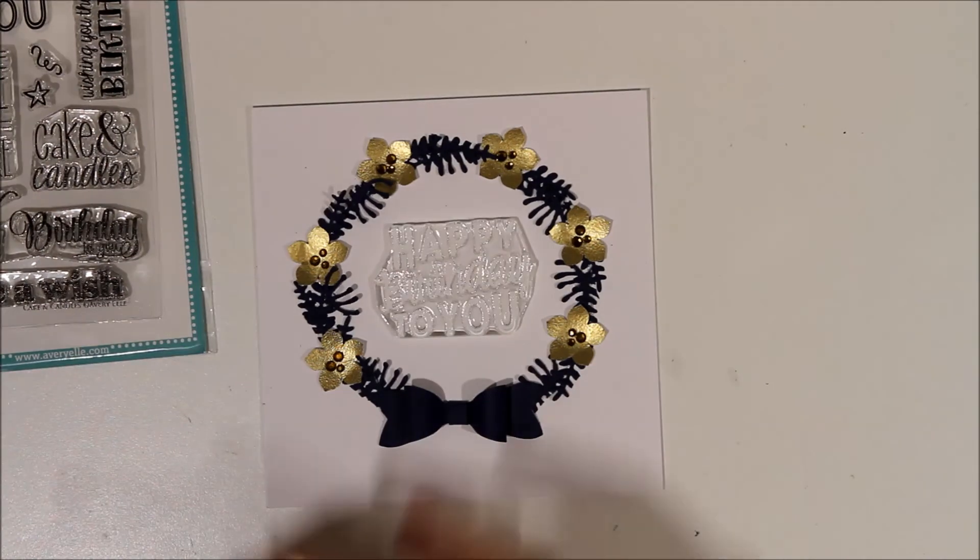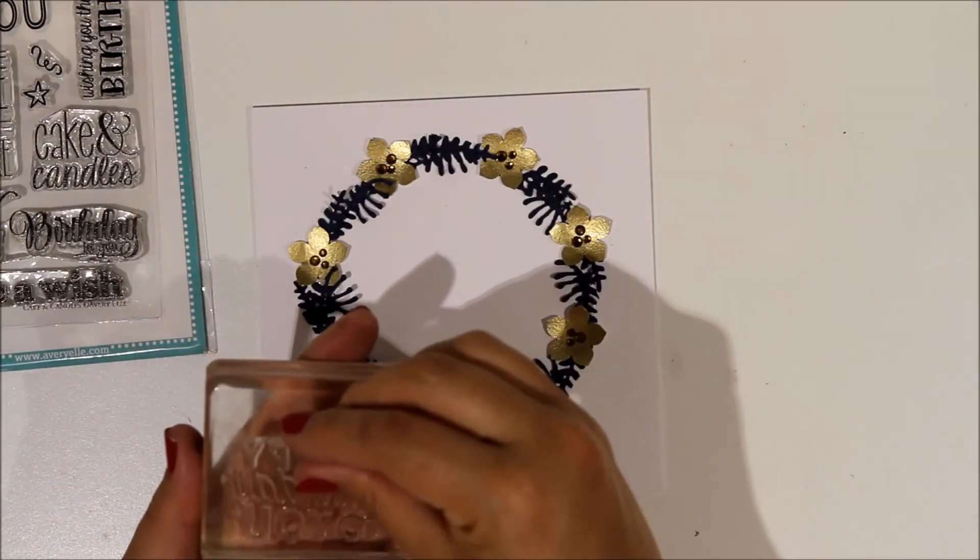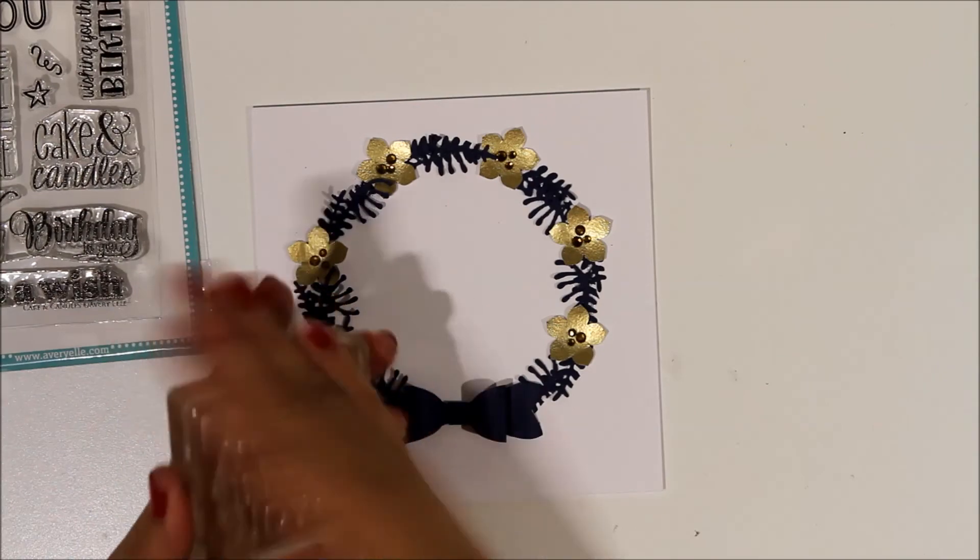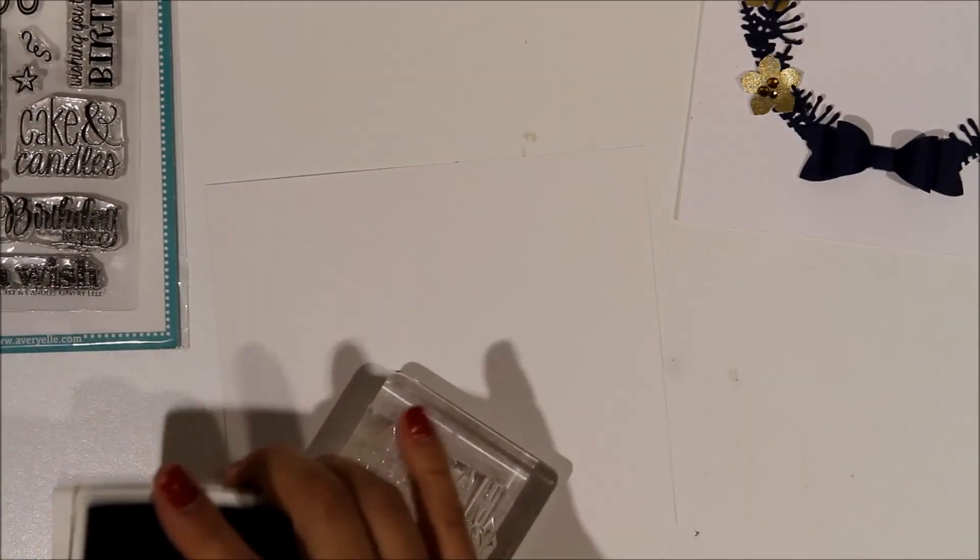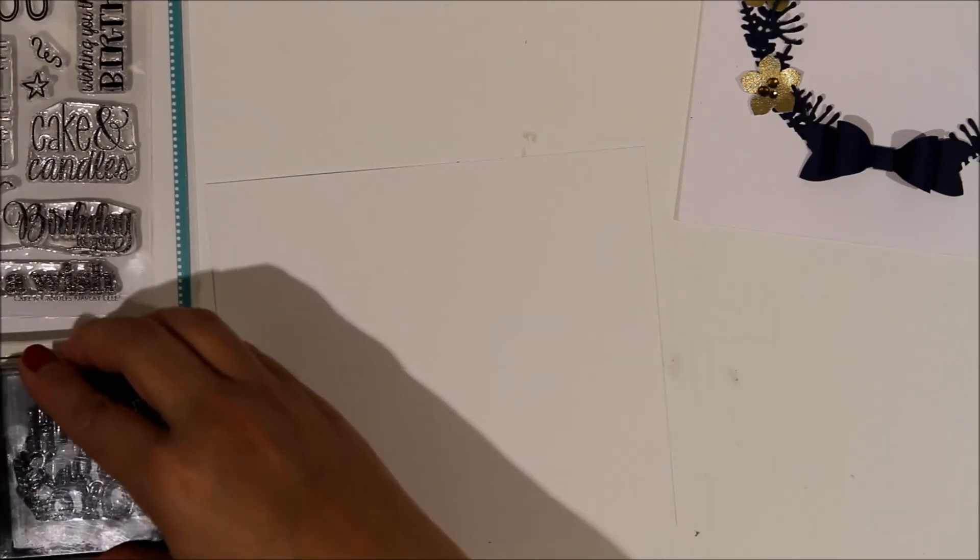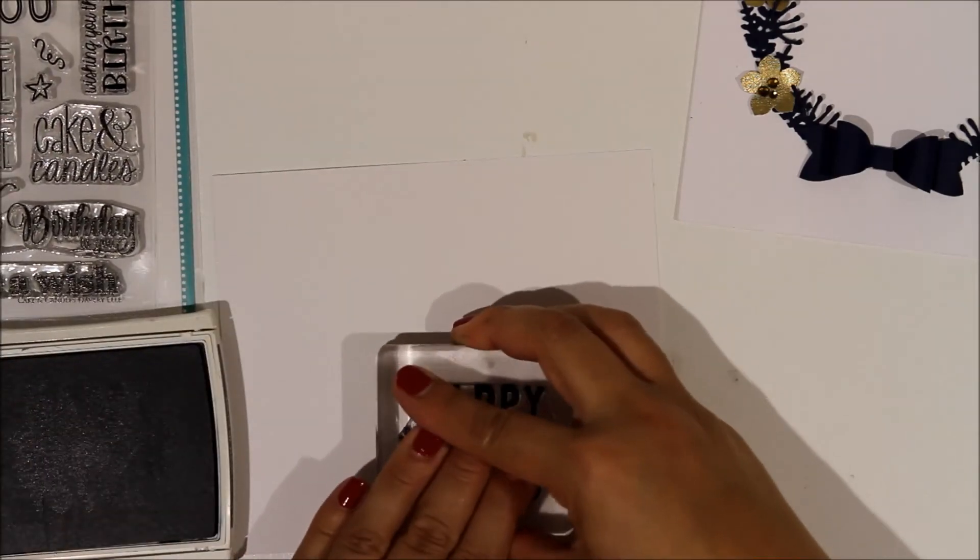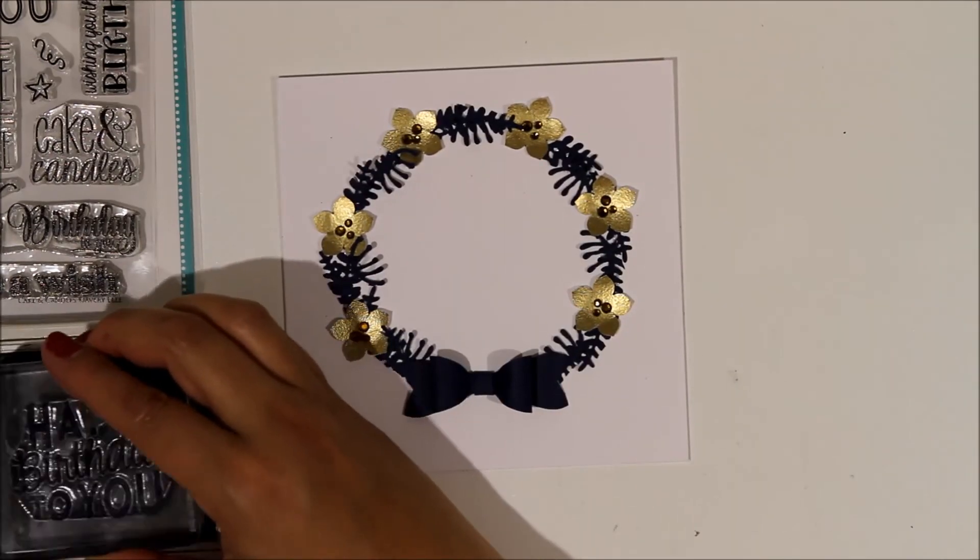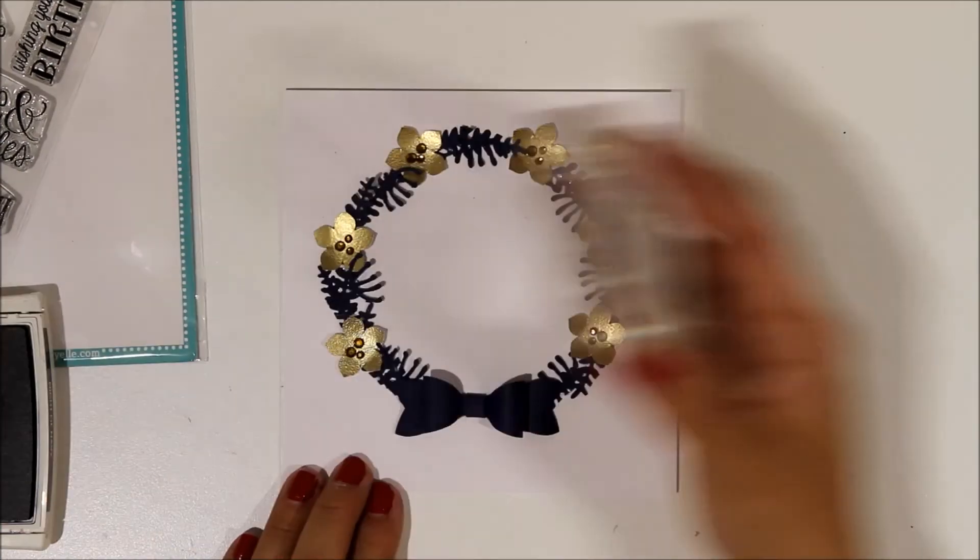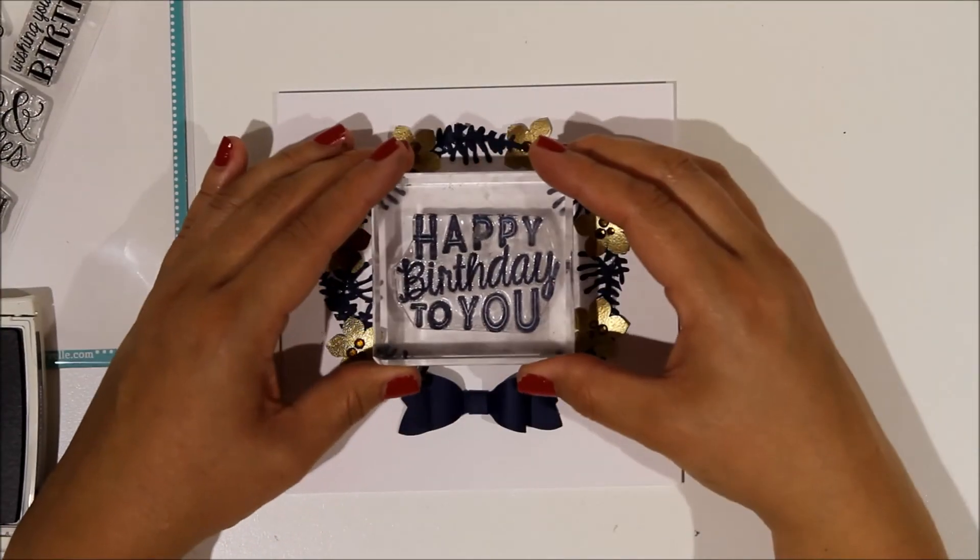And now I've got to work on my sentiment. Now I grab from my collection this Avery Elle sentiment set—it's called Cake and Candles—and I want to use that Happy Birthday to You. Now I'm panicking a bit here because obviously I would like to have used my MISTI and to go down to make sure that I get a good impression from that stamp. But I can't because I've assembled the front of the card, I've got the bow on there and got all those flowers on there so I can't do it.